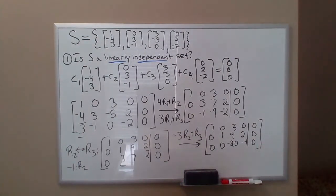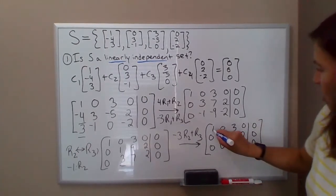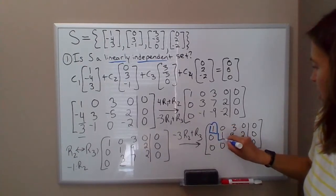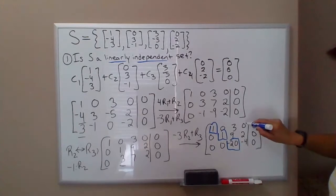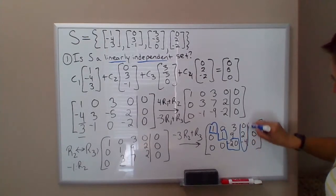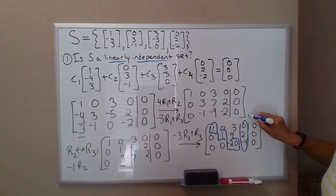Now, so we see now, here's our pivots, here, here, and here. There's no pivot in column four, so we definitely have a free variable.